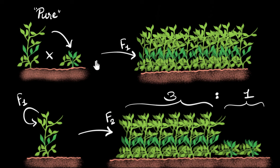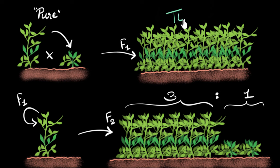Mendel says, by looking at this, he guesses that when you cross the pure tall and the short plant, both the tall and the short trait got passed along. So these plants have gotten both the traits — the tall trait, which he represents with a capital T, and the short trait, which he writes as small t. So these plants contain both traits. But if they contain both traits, then why are they all appearing tall? Why don't they appear short?